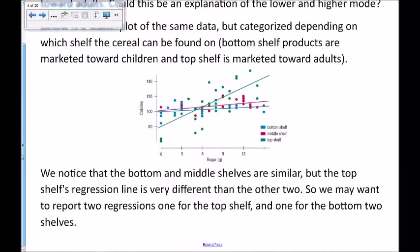So if we do a regression equation for each shelf separately, those are graphed here these lines. We notice that the bottom shelf and the middle shelves are very similar, but the top shelf is very different than the other two. In fact that's where we get those other little peaks from our residual plot is from the top shelf. So we may want to report two regressions, one for the top shelf and one for the bottom two shelves.